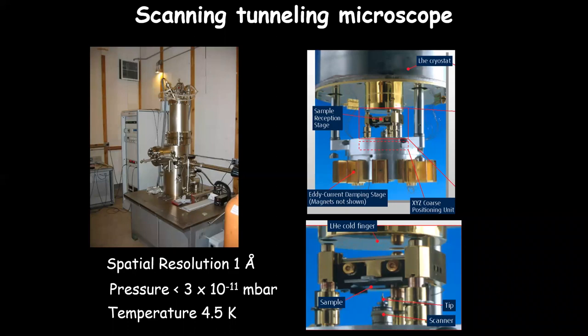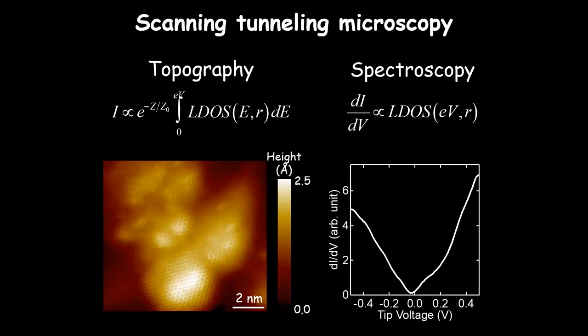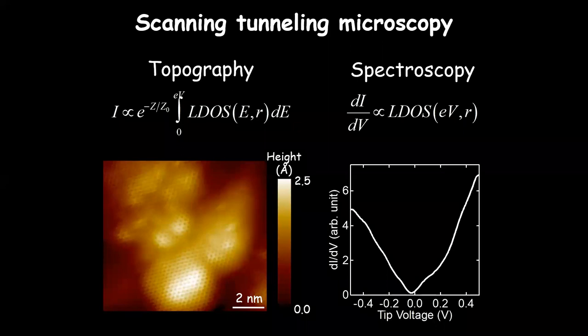We have two different modes of operation. In topographic mode, we scan the tip while a feedback circuit keeps the tunnel current between tip and sample constant. Because that tunnel current depends exponentially on the separation, we get a very high-resolution image of the topography. Here's an example image of graphene on silicon oxide substrate — you can see the little hexagonal lattices, that's the carbon lattice, with height variation on the order of a few angstroms.